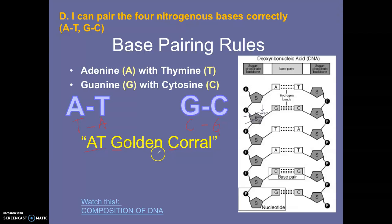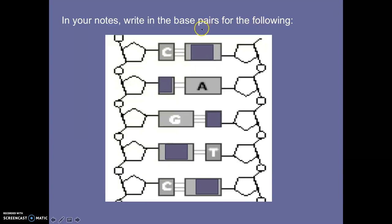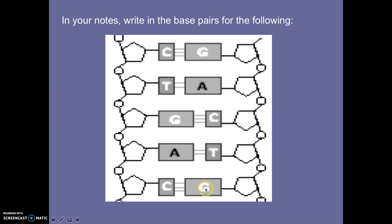Make sure you write in your notes what these pairings are going to be. Stop the video and answer it. C is going to pair with G. A on this side is going to pair with T. Then G pairs with C. Another T is going to pair with A. And finally, C will pair with G.